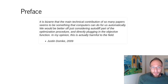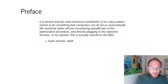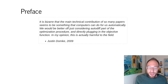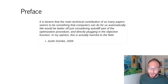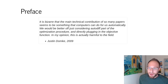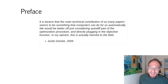As a preface, the title of this talk comes from a blog post from 2009 by Justin Dompke. In it he notes how strange it is that we don't use autodifferentiation more in machine learning — an observation that seems obvious in retrospect. At the time he said it is bizarre that the main technical contribution of so many papers seems to be something that computers can do for us automatically. We would be better off just considering autodiff part of the optimization procedure and directly plugging in the objective function. In his opinion, this is actually harmful to the field.